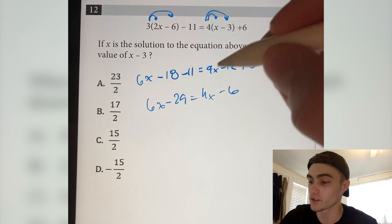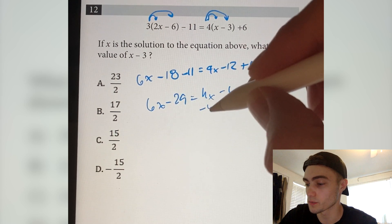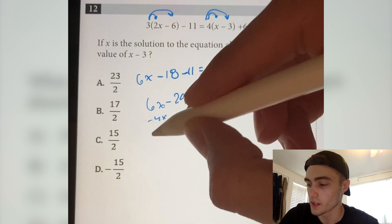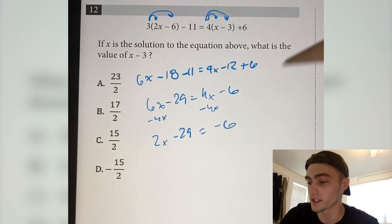So now I have this. I want to get all the x's on one side, so what I'm going to do is subtract 4x from both sides. So now we have 2x minus 29 equals minus 6.